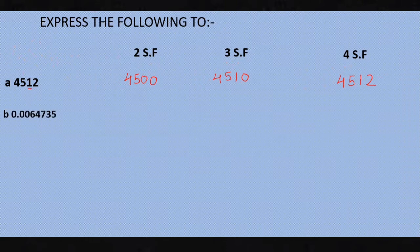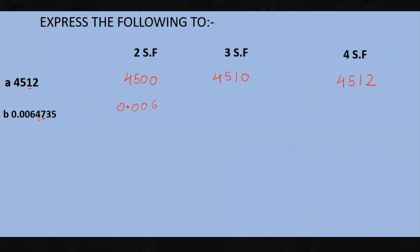Let's check the next question. Pause the video and try it. For two significant figures of 0.006473..., the leading zeros are not significant. The first significant figure is 6, the second is 4. Look at the third significant digit, which is 7. Since 7 is more than five, add one to the previous digit. The answer to two significant figures is 0.0065.